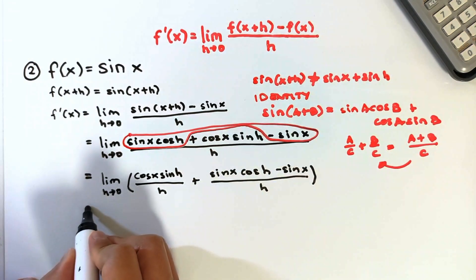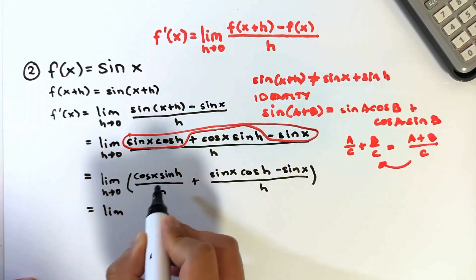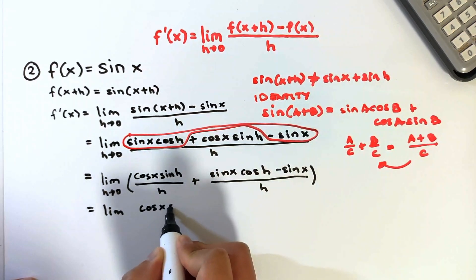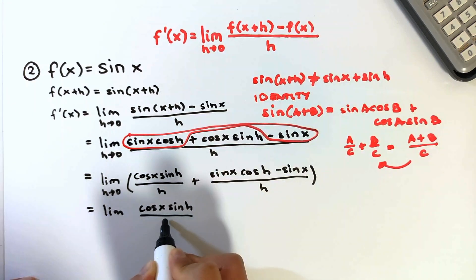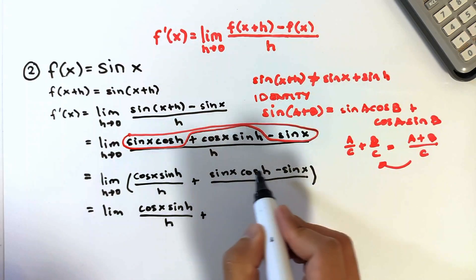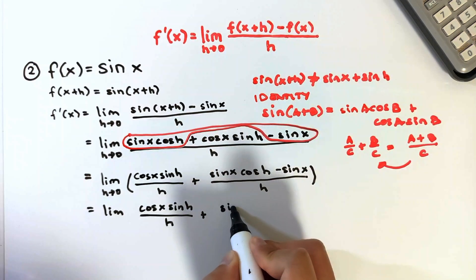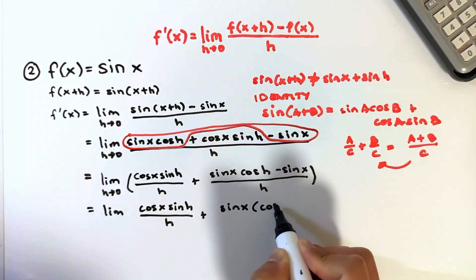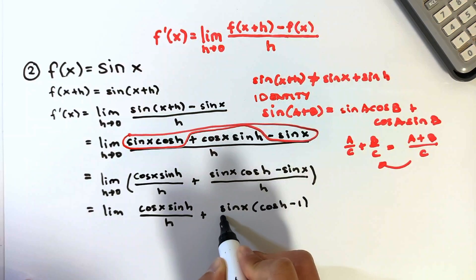This is equal to the limit of cosine x sine h over h, plus sine x times cosine h minus 1 over h, as h approaches 0. I factored out sine x from the second term.